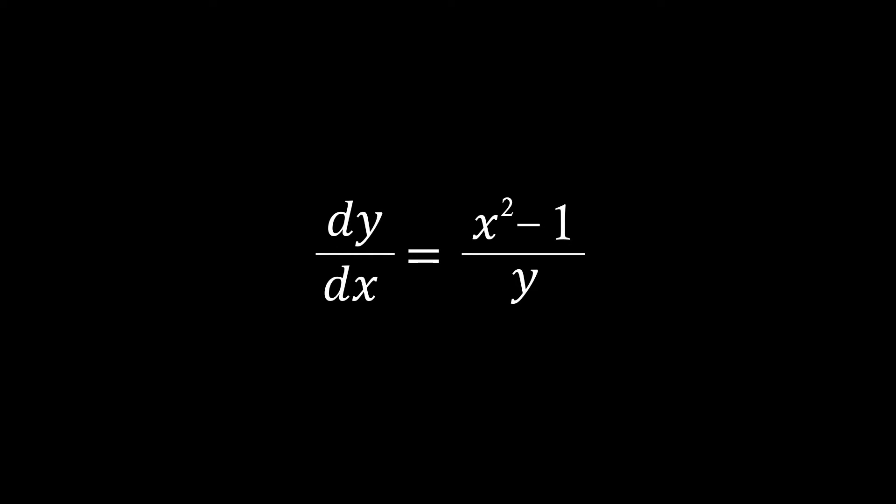We have dy over dx equals x squared minus one all over y. If we observe where the y is in the equation we want to move this to the same side as the dy over dx.